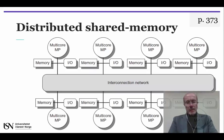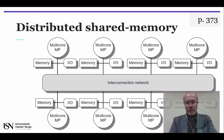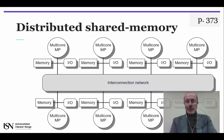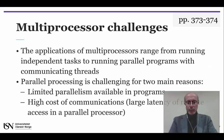The distributed shared memory structure comprises a network interconnecting multiple multi-core multiprocessor nodes, with memory and possibly I/O, where each processor core shares the entire memory, although the access time to the local memory attached to the core's chip is much faster than the access time to remote memory. The application of multiprocessors ranges from running independent tasks with essentially no communication to running parallel programs where threads must communicate to complete the task.